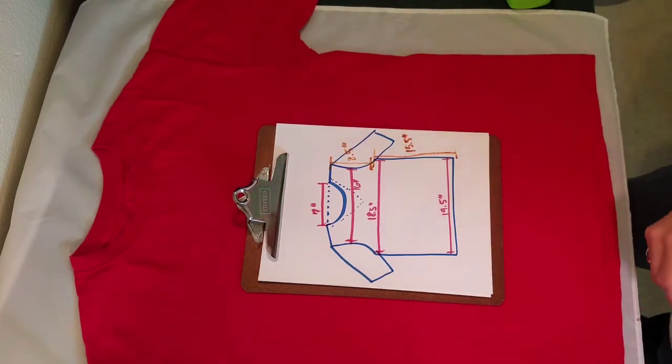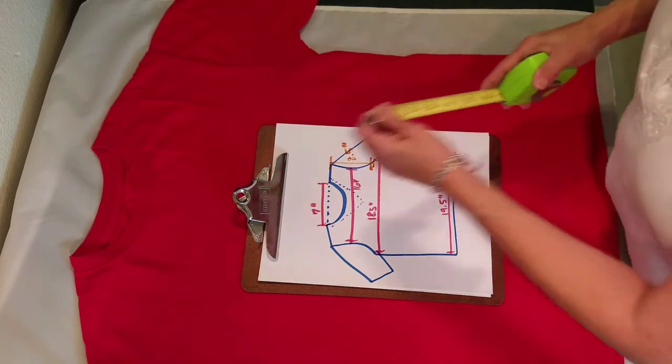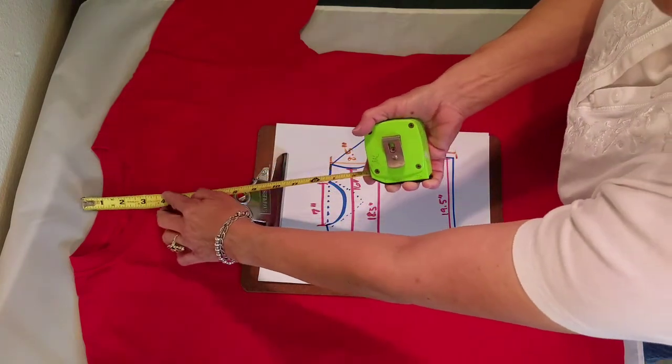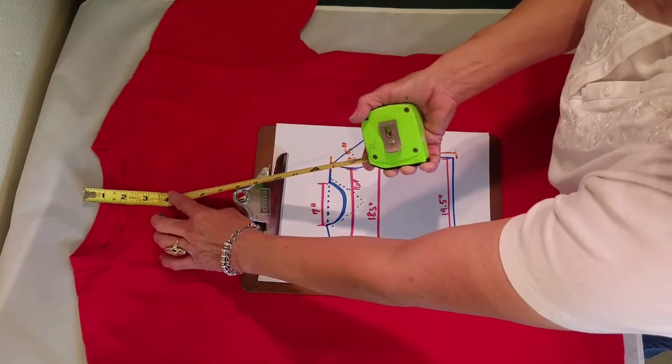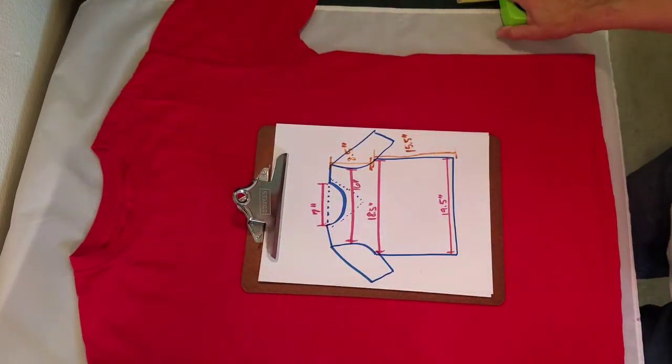Then measure the depth of the neck drop. And our sweater is not going to have back neck shaping like this, so I'm going to measure straight across, not including the border, 3 and a half inches.